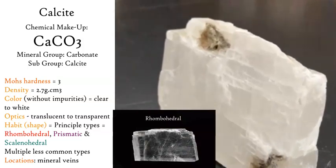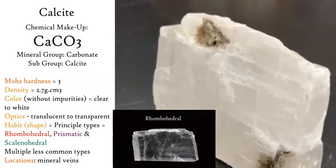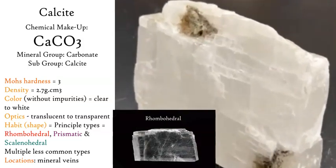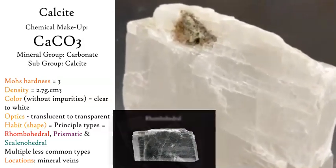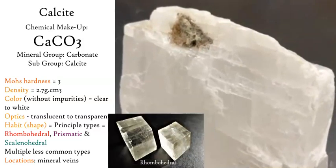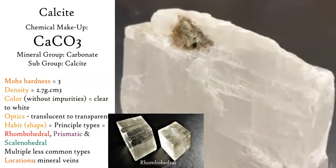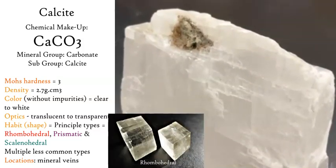The most common location we find calcite is in mineral veins. The three main types of habits are scalenohedral, rhombohedral, and prismatic.